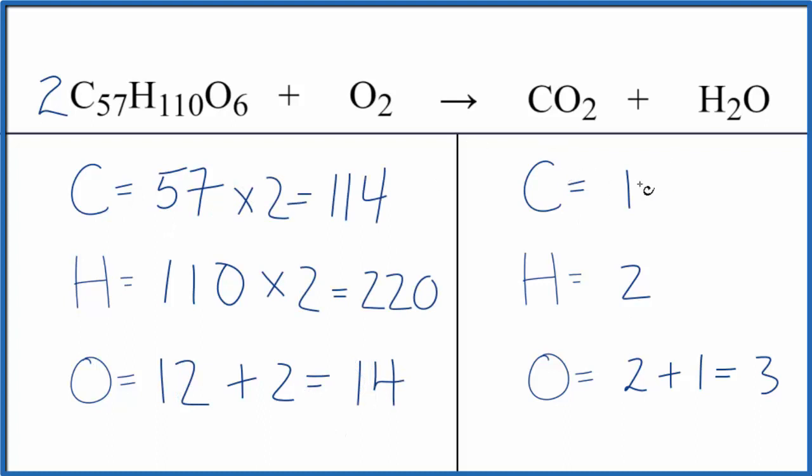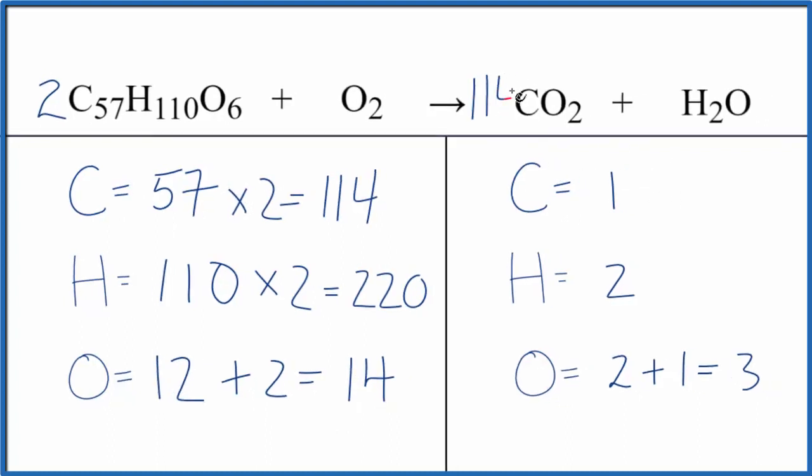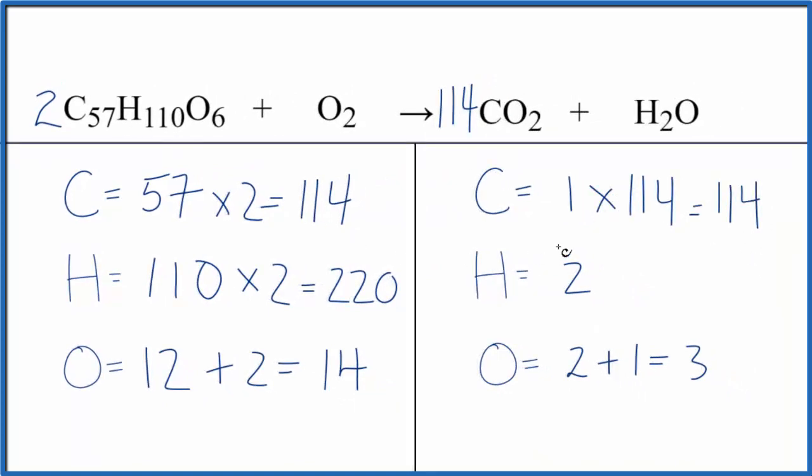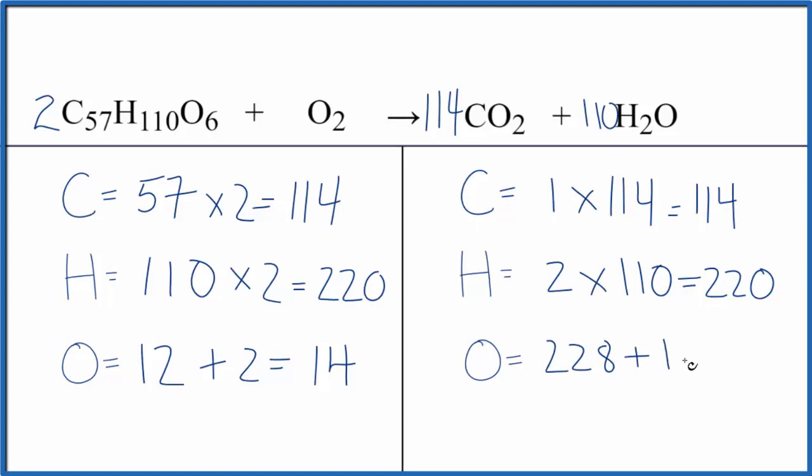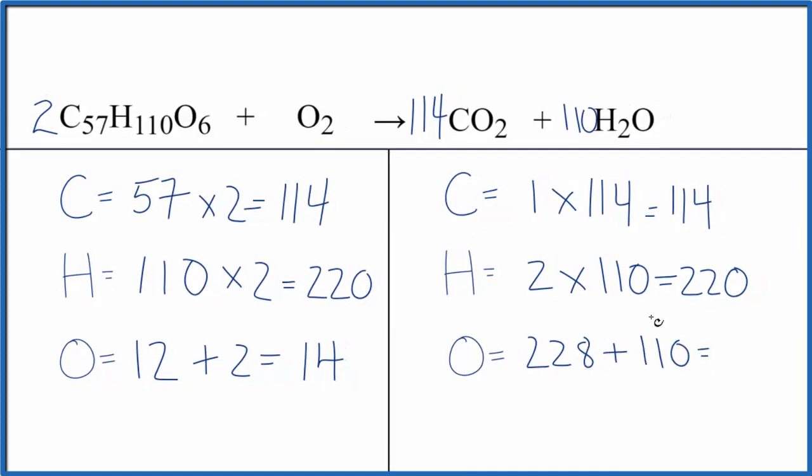So now I think I'll balance the carbons. If I multiply CO2 by 114, those will be balanced. I do need to update the oxygen atoms. So we have two times 114, that's 228, plus the one times 110. This will give us 338.